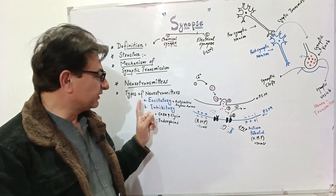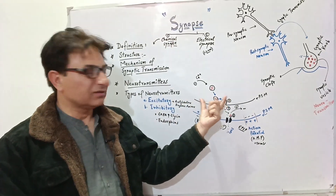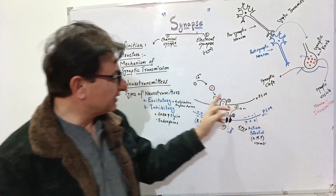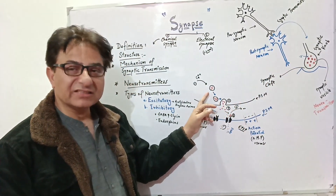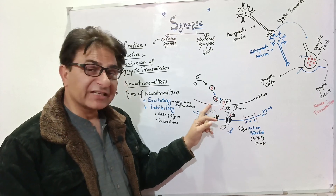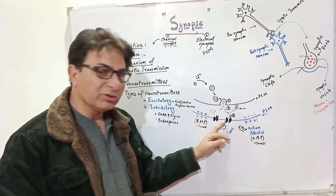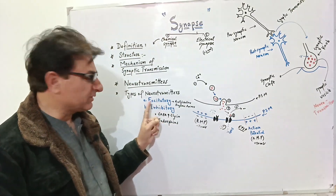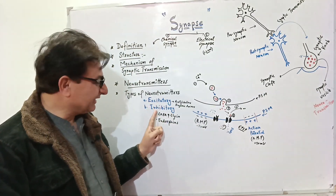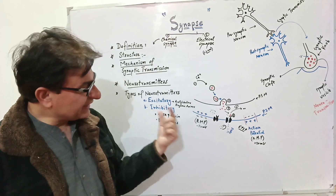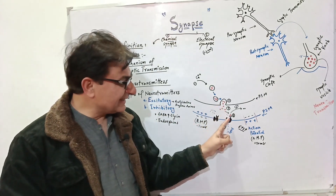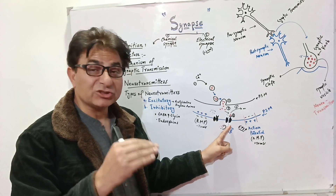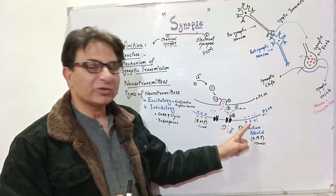The next topic is types of neurotransmitters. In chemical synapses, neurotransmitters carry information from the pre-synaptic membrane to the post-synaptic membrane. Neurotransmitters can be of two types: excitatory or inhibitory. Excitatory neurotransmitters increase the permeability of sodium and decrease the threshold value so that an action potential can be generated.